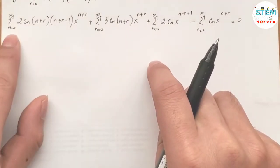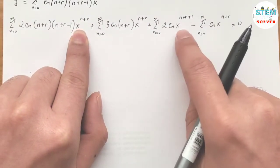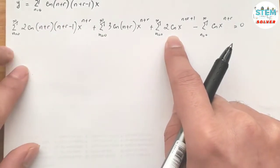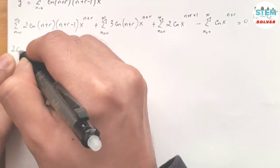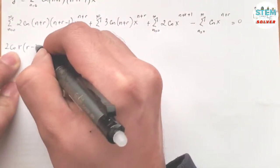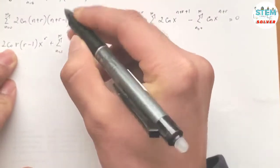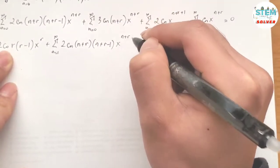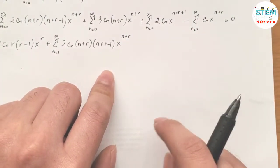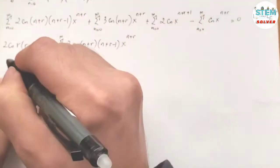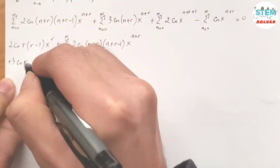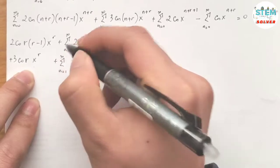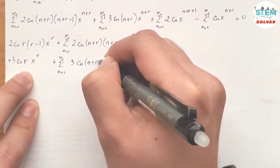Now we look at the index. When n = 0, the lowest power is xʳ and the third sum gives xʳ⁺¹ as the highest exponent, so we need to write out the n = 0 terms separately. For the first sum, plug in 0: 2c₀ r(r−1) xʳ + Σ from 1 to ∞ of 2cₙ (n+r)(n+r−1) xⁿ⁺ʳ. For the second sum: 3c₀ r xʳ + Σ from 1 to ∞ of 3cₙ (n+r) xⁿ⁺ʳ.